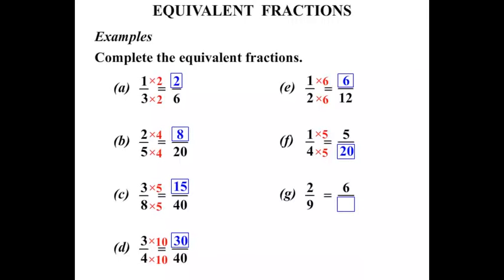The next one, again, we know both numerators, both top numbers. So looking at the 2, how do we change that to a 6? We do that by timesing by 3. So if we times the top by 3, let's times the bottom by 3 as well. And 9 3's are 27.